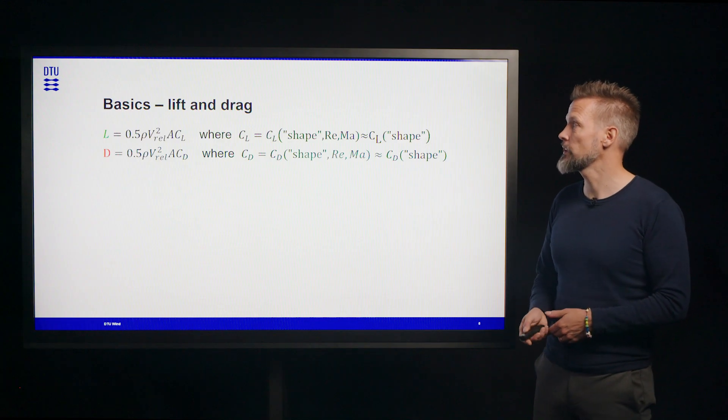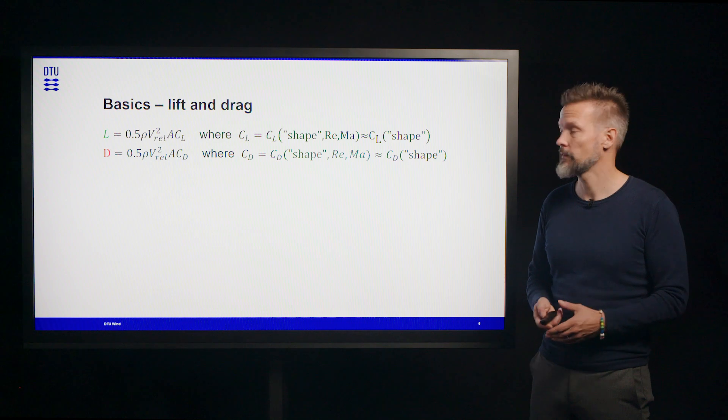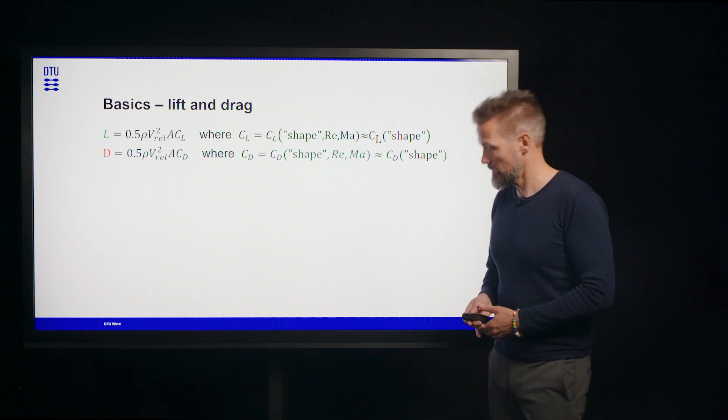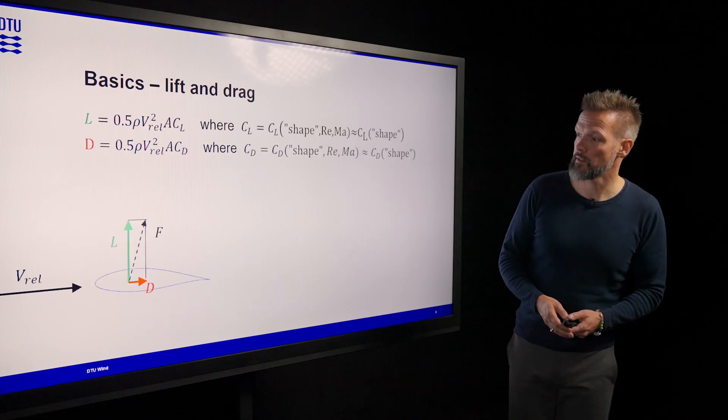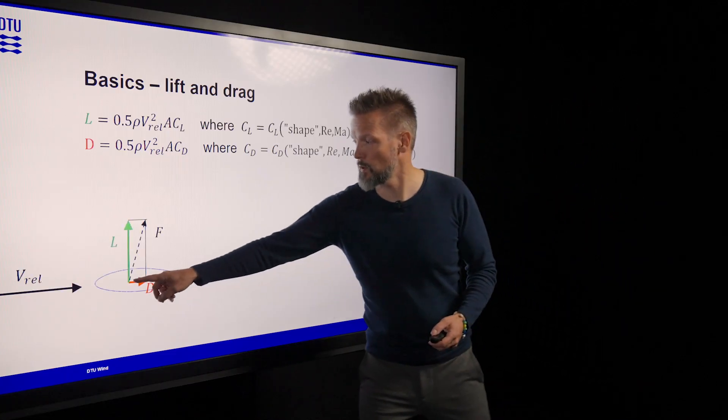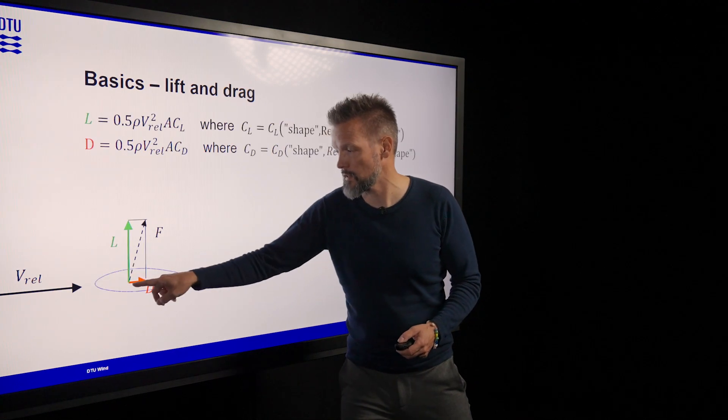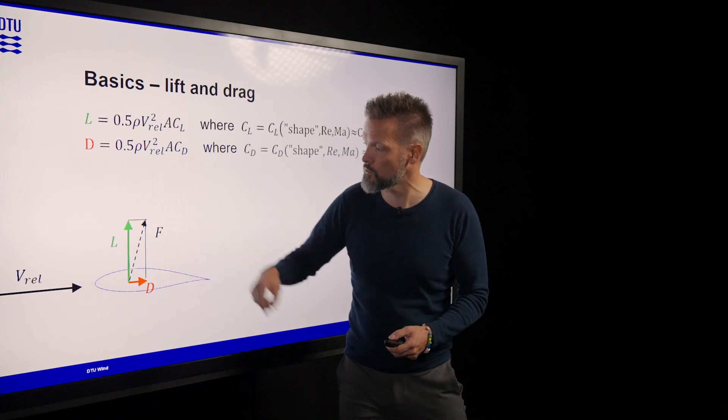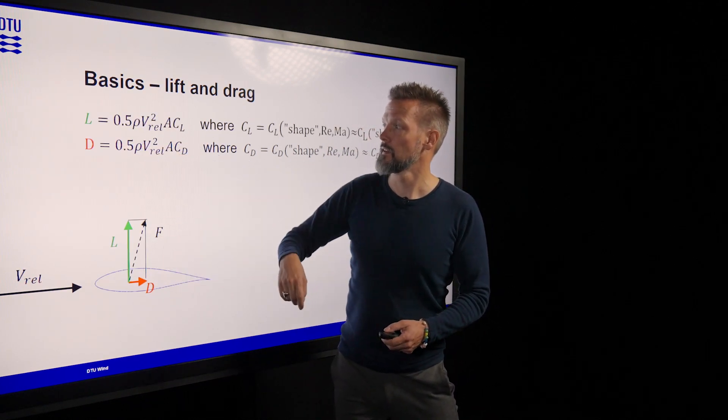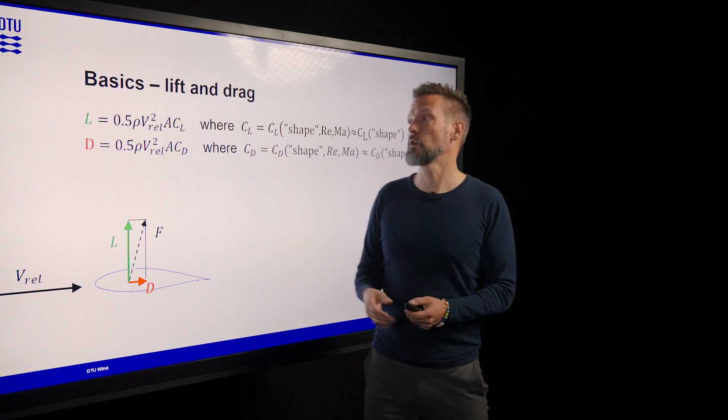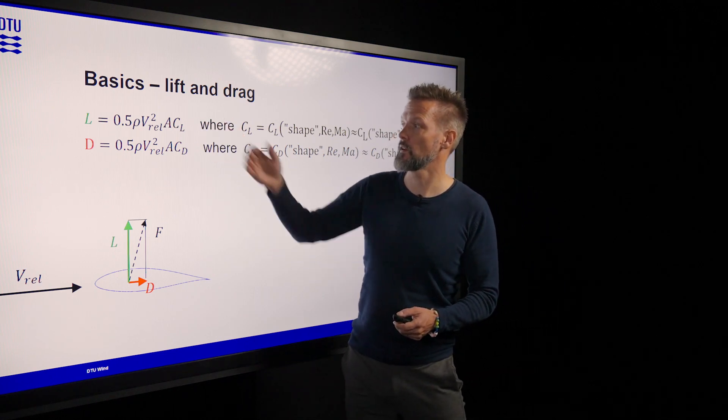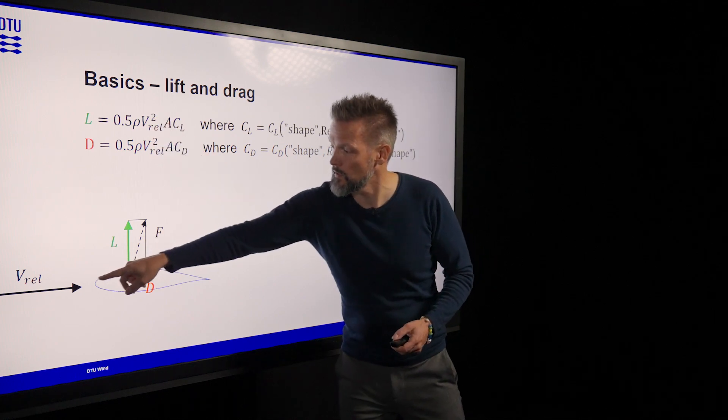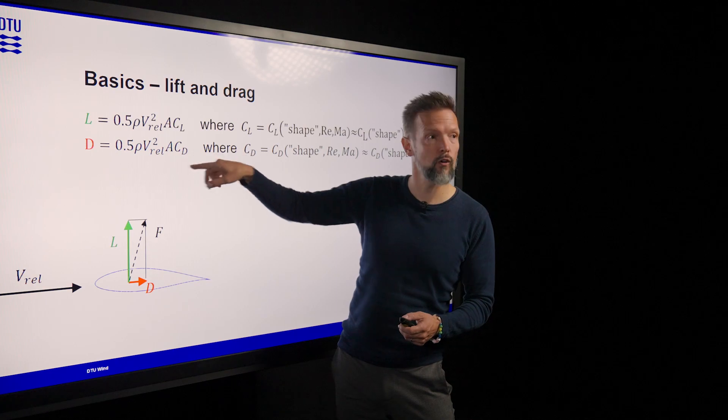Two other things we'll be using is lift and drag. So it turns out that lift is the force perpendicular to the wind speed, drag is the force component in the direction of the wind speed. So the total force is the sum of the two. The lift and the drag can be in these cases that we look at calculated with equations like this. So they scale with the density, relative wind speed squared, area of the device and then coefficients.